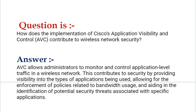Our interview question on securing Cisco Wireless Enterprise Networks is: How does the implementation of Cisco's Application Visibility and Control (AVC) contribute to wireless network security? Your answer should be: AVC allows administrators to monitor and control application-level traffic in a wireless network. This contributes to security by providing visibility into the types of applications being used, allowing for the enforcement of policies related to bandwidth use, and aiding in the identification of potential security threats associated with specific applications.